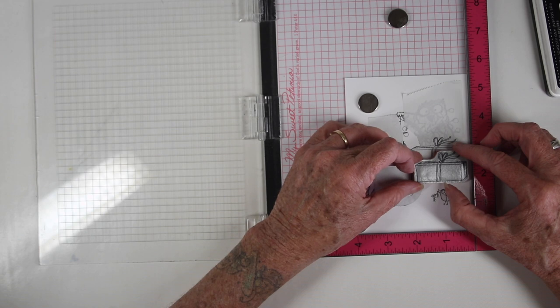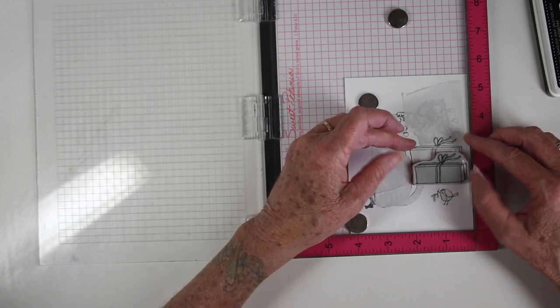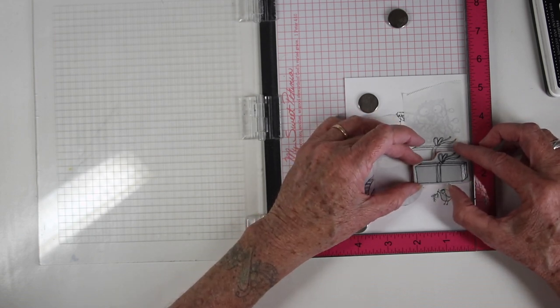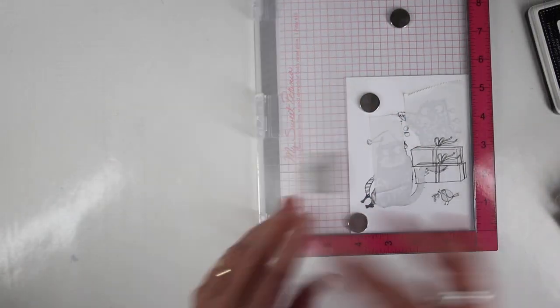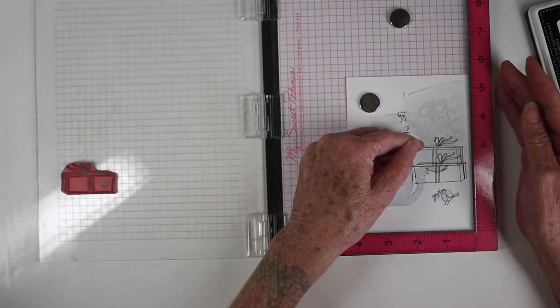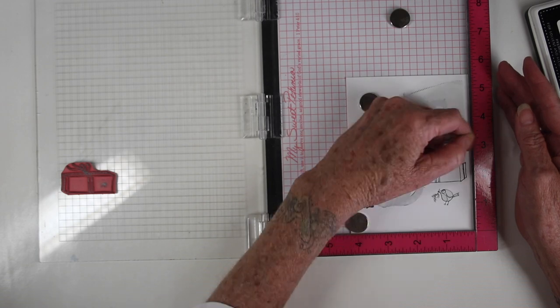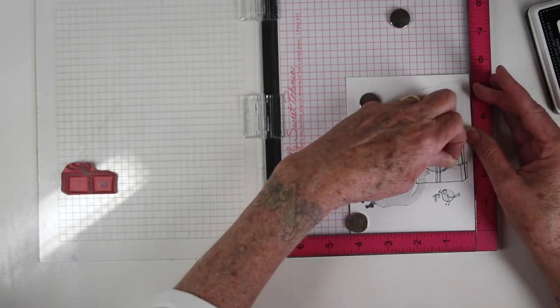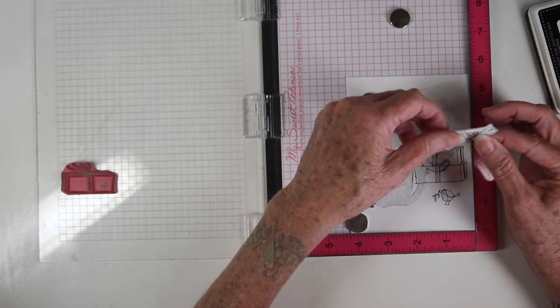So I'm going to stagger this a little bit so it's not sitting directly under the first one, it's sitting slightly to the right and once I'm happy with that placement I can shut the door, re-ink this and stamp that in place and once I remove my mask you can start to see the stacked presents.